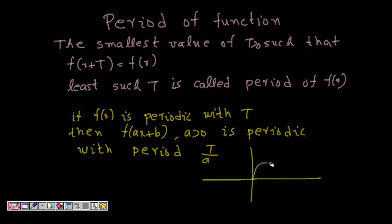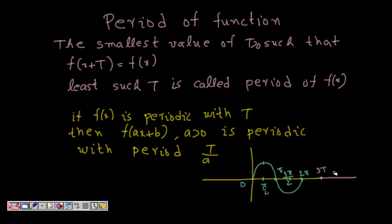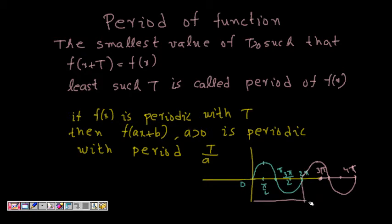Sine x looks like this: from 0, π/2, π, 3π/2, to 2π — this is how the function looks from 0 to 2π. Now if we plot the same function from 2π to 4π, so this is 3π and this is 4π, it follows the same structure — it is just a replica of what was in 0 to 2π, shifted to 2π to 4π.